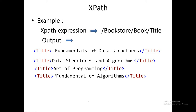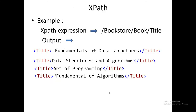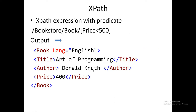From the previous slide, you can see that the book titles are: Fundamentals of Data Structure, Data Structure and Algorithm, Art of Programming, and Fundamentals of Algorithm — all four titles are retrieved using this XPath expression. You can also insert a predicate in an XPath expression to apply conditional retrieval. Here, the path starts from root element bookstore, within that book, and retrieves all book elements where price is less than 500. In our sample XML document there is only one book — Art of Programming with price 400 — that satisfies this condition.